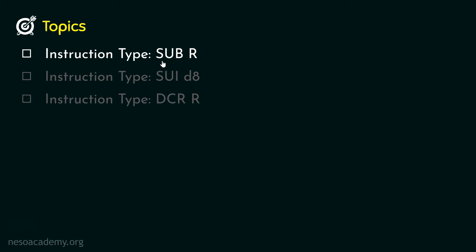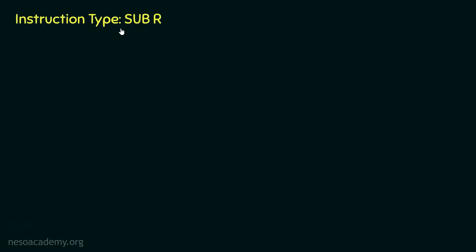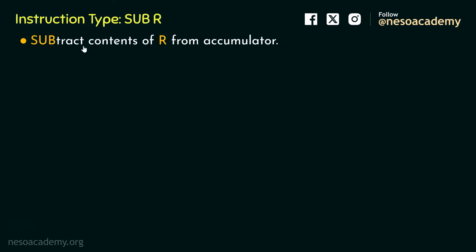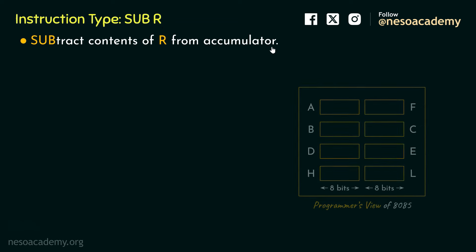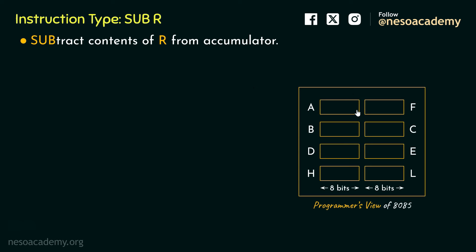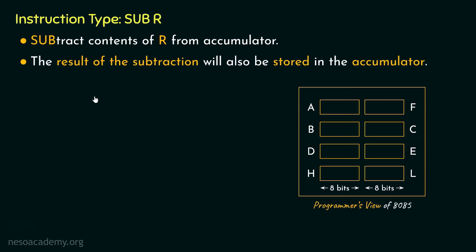Let's begin with the first instruction type SUBR. The mnemonic SUB stands for subtract and the instruction means subtract contents of R from accumulator. One of the operands will reside within the accumulator and the other operand is stored in any location specified by capital R. Once the subtraction is performed, the result will also be stored in the accumulator. Just like the instruction ADDR, SUBR also falls under the one-byte-long instructions category.